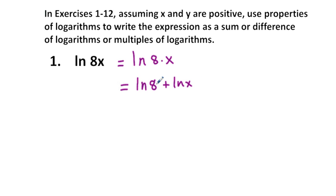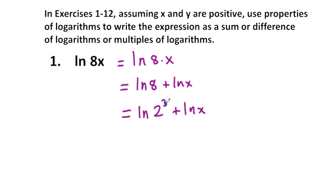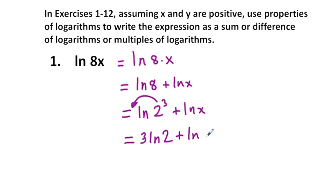We rewrite this as the natural logarithm of 8 plus the natural logarithm of x. There is one more simplification possible: we can rewrite ln(8) as ln(2³). Carrying down the natural logarithm of x, we take that exponent 3 and bring it out in front of the natural logarithm. So we rewrite this as 3·ln(2) + ln(x), which is the most simplified form of this logarithmic expression.